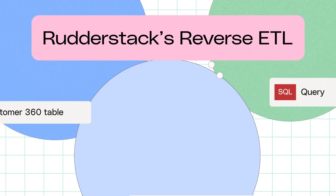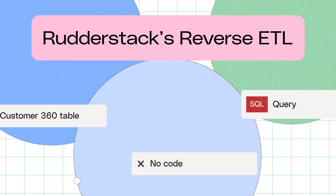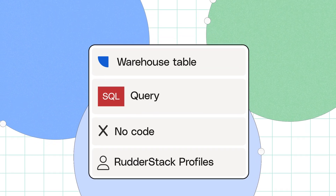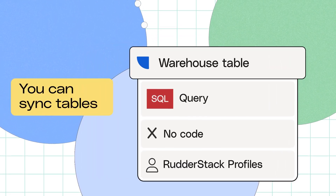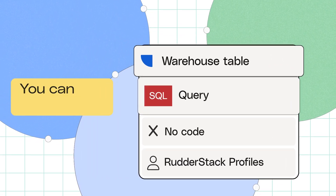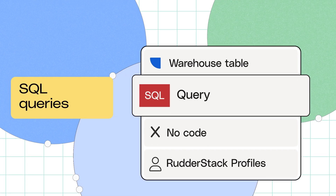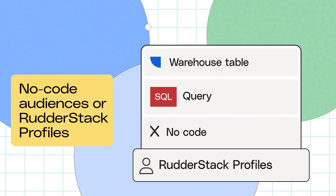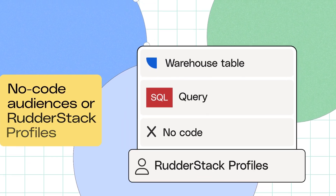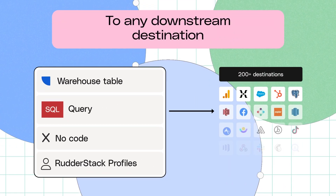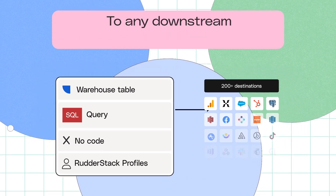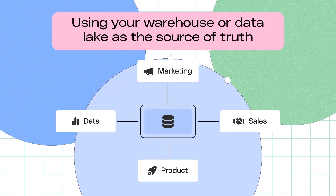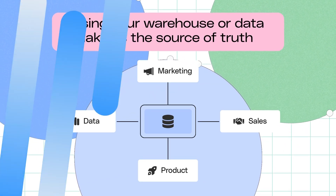Rudderstack's Reverse ETL enables you to simplify data activation for your business teams. You can sync tables, SQL queries, no-code audiences, or Rudderstack profiles to any downstream destination using your warehouse or data lake as the source of truth.